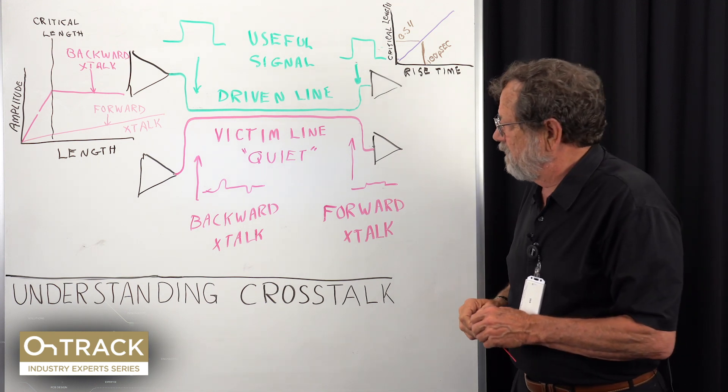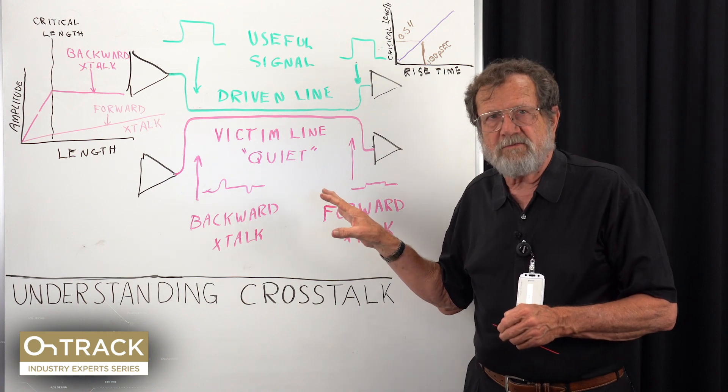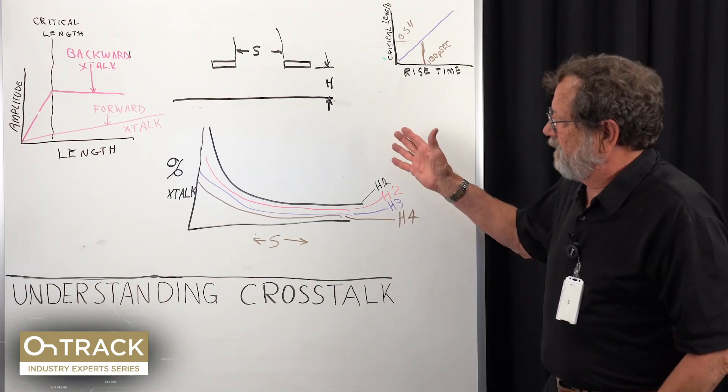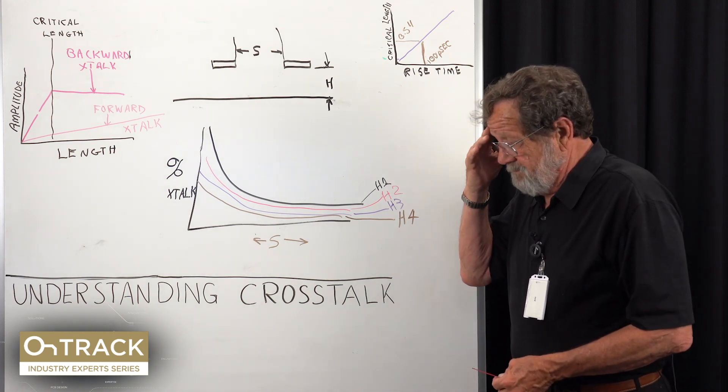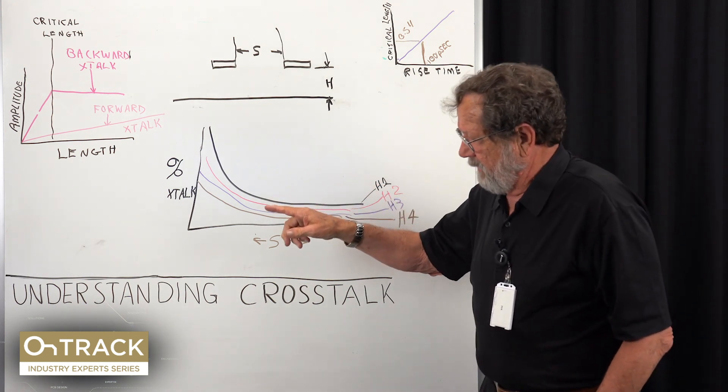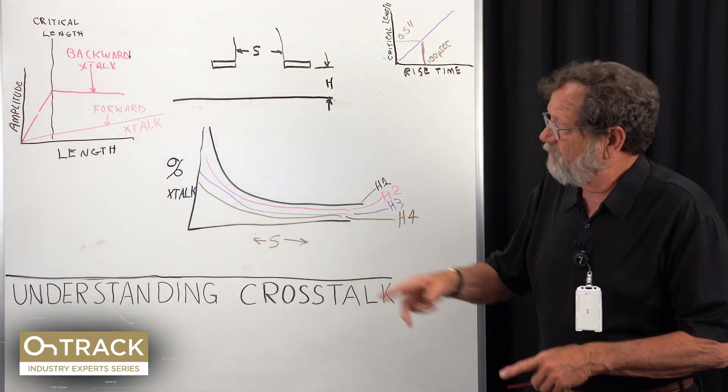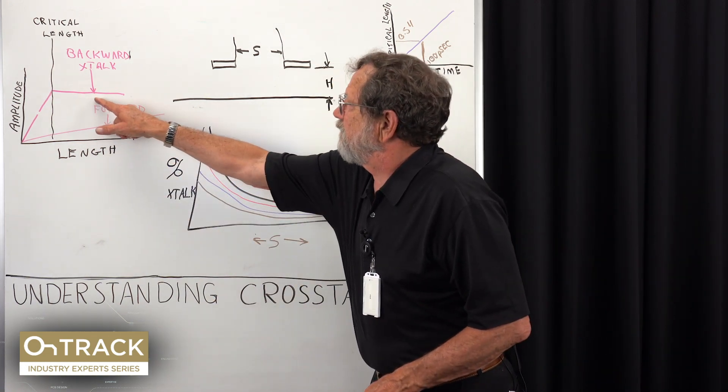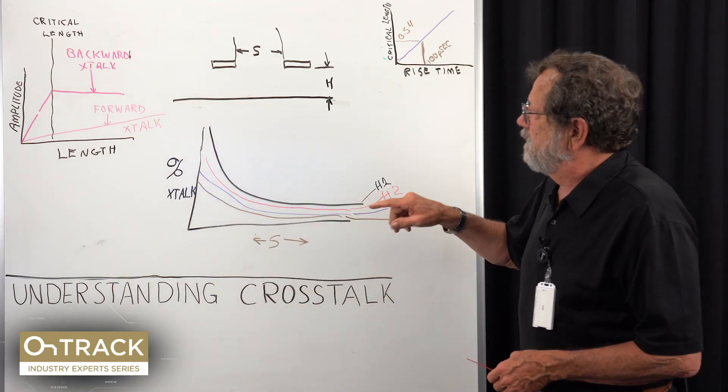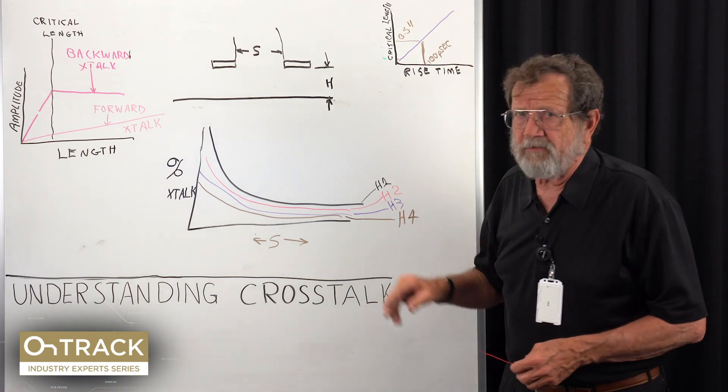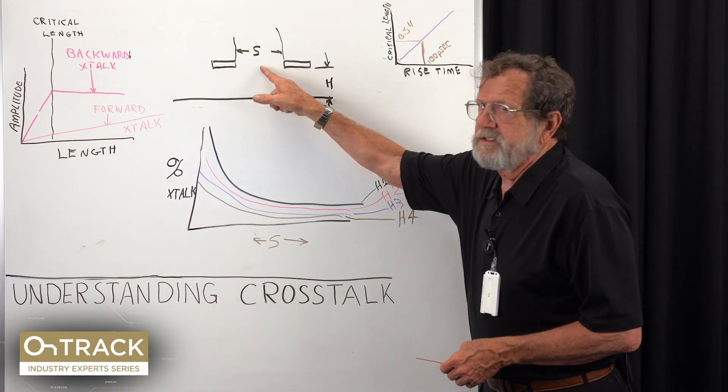So what does work? What I've drawn on the whiteboard here shows that once we know we have to route longer than critical length, it doesn't matter if we continue to route side by side longer because crosstalk does not get worse. Under those conditions, the only two variables that remain are height above the nearest plane and edge to edge separation.